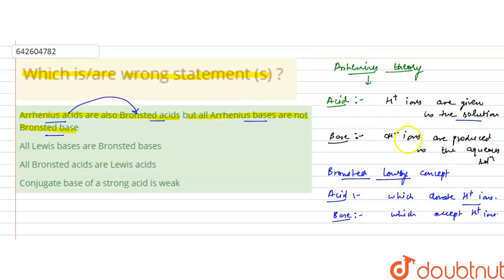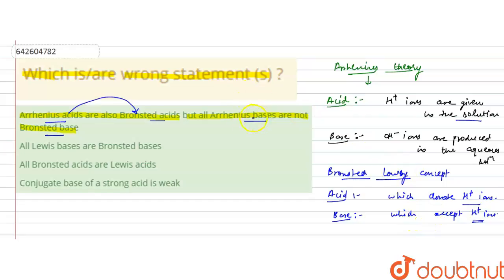But the statement also says all Arrhenius bases are not Bronsted bases. According to Arrhenius theory, a base produces OH⁻ ions in aqueous solution. According to Bronsted-Lowry theory, a base accepts H⁺ ions. It is not necessary that all Arrhenius bases will also accept H⁺ ions, so this statement is correct — all Arrhenius bases are not necessarily Bronsted bases.